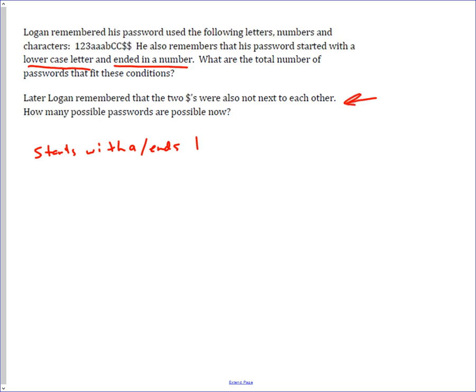then we know we have an A here, we have a one here, and then we've got nine letters left inside to place. So using the letter arrangement formula, we know we're going to do nine factorial divided by the repeats.